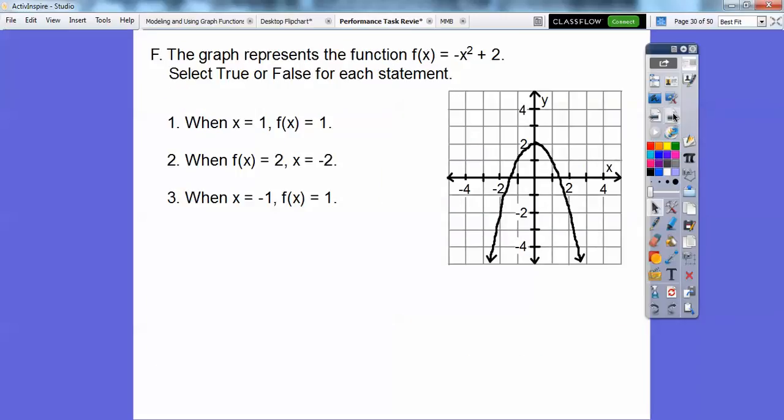All right. And then so this graph represents the function f(x) equals negative x squared plus 2. All right, so state true or false for each of these statements right here. So when x equals 1, so let's go over here. When x equals 1, you go up to the graph right there. f(x), which is y, that's how high it goes up. So this would be 1 right here. So when x equals 1, this is also 1 right here. So that one looks true.